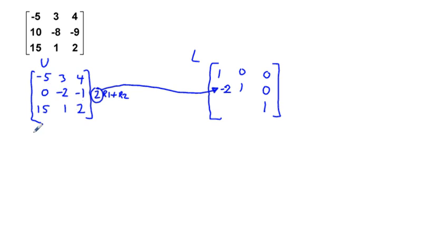Next thing we're going to do is get rid of this 15. What are we going to do to get rid of that 15? What we're going to do is we're going to take 3 times row 1 and add it to row 3. In the meantime, we're going to continue to write. We have here -5, 3, 4, 0, -2, -1. These top two rows will not change at all. So we say 3 row 1 plus row 3.